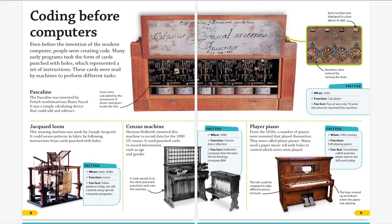They used to have another machine called the census machine. Herman Hollerith invented this machine to record data for the 1890 US Census. It used punched cards to record information such as age and gender. Even in 1890, they used to have this machine which could actually count the votes.